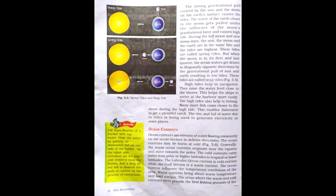The warm ocean currents originate near the equator and move towards the poles. The cold currents carry water from polar or higher latitudes to tropical or lower latitudes. For example, the Labrador ocean current is a cold current while the Gulf Stream is a warm current.